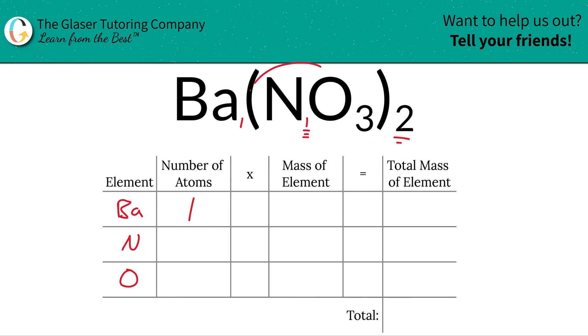So if in every one nitrate, there is one nitrogen, but you have two nitrates, that means you have two nitrogens in total. In other words, just take the subscript of nitrogen, multiply it by the subscript of the overall polyatomic ion.